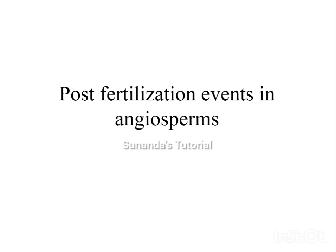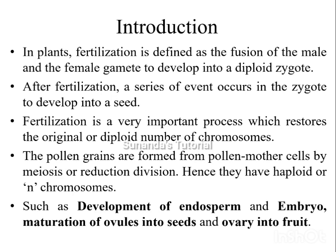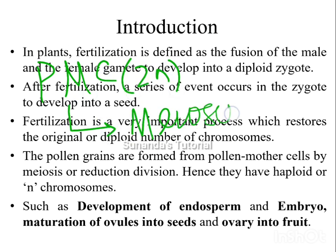Hello students, good morning. In this video we will discuss about the post-fertilization events occurring in angiosperms. In my previous video I discussed about fertilization, so today we will discuss the events after fertilization. Fertilization means the fusion of male and female gamete to form a diploid zygote. Haploid male gametes are formed by meiosis in pollen mother cells, which are diploid and undergo meiosis to form haploid male gametes.